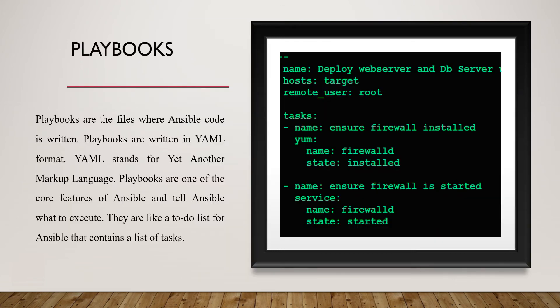Playbooks are the files where Ansible code is written. Ansible playbooks are written in YAML language — YAML stands for Yet Another Markup Language. On the right-hand side you can see a playbook where the plays are written. The playbook consists of a name, which is the name of the playbook, and the host field, which defines where you want to push the changes.